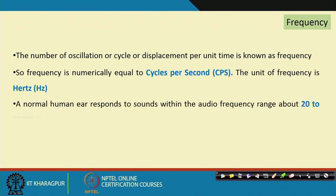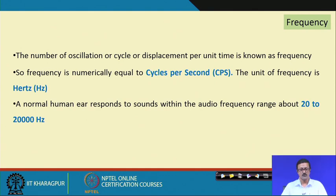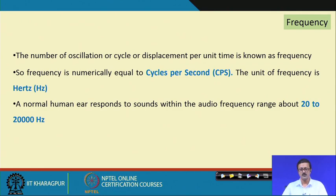Frequency, as we already discussed in lecture number 2, is the number of oscillations or cycles dispatched in a unit time in a wave motion. Its unit is hertz or cps. Out of the thousands of frequencies available in nature, human beings can only respond to 20 to 20,000 hertz.